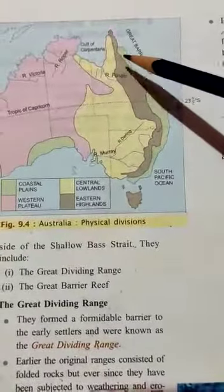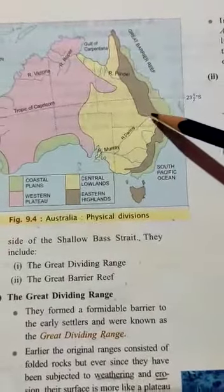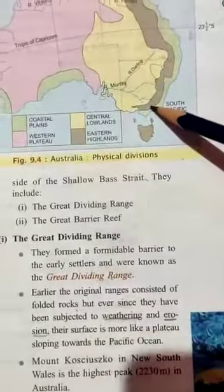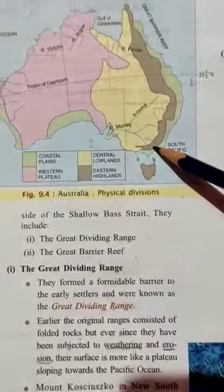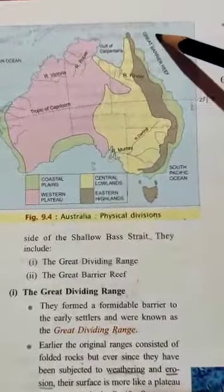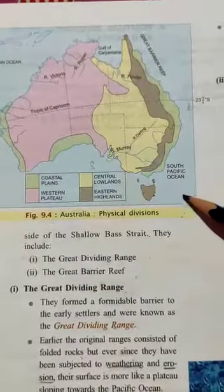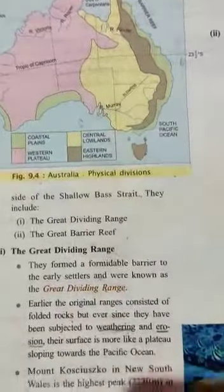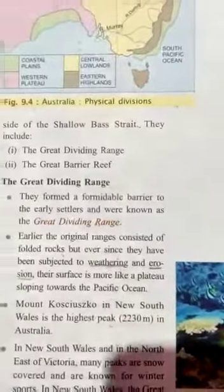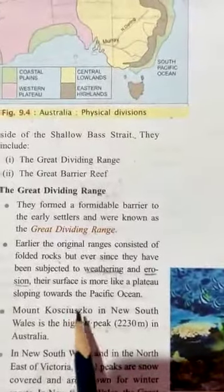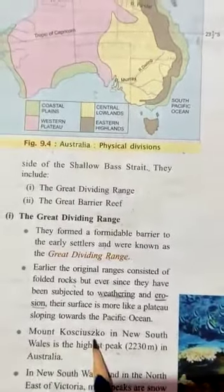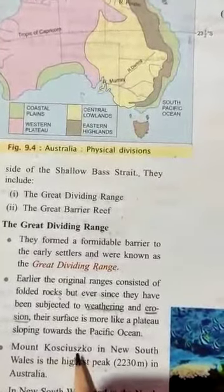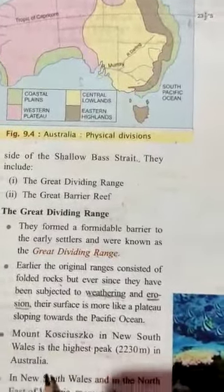Here you can see in this figure - this portion looks more like a plateau and its sloping is towards the Pacific Ocean, shown in blue. It consists of many mountain ranges. Mount Kosciuszko, which is in New South Wales, is the highest peak in Australia.